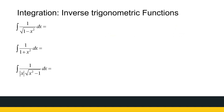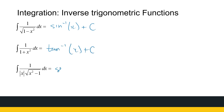The integral of one over the square root of one minus x squared gives inverse sine of x plus C, or equivalently negative inverse cosine of x. Since they differ by a constant, we only need arc sine. The next standard form gives arc tan of x plus C, and the third gives arc sec of x plus C.